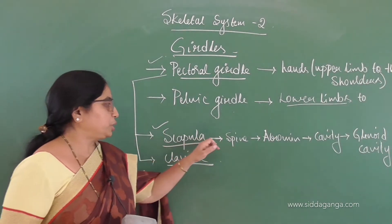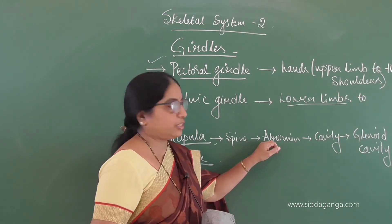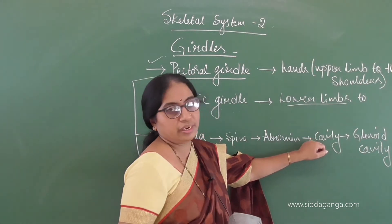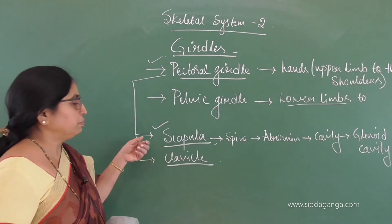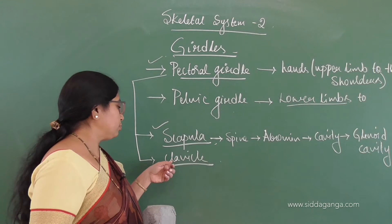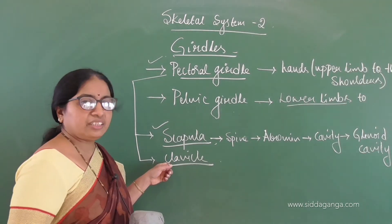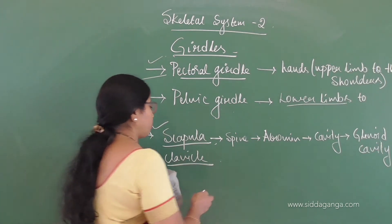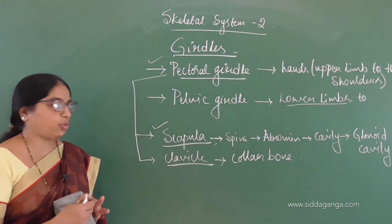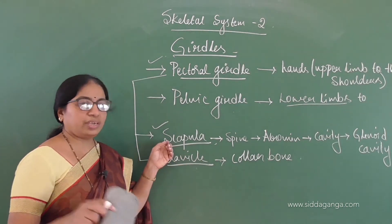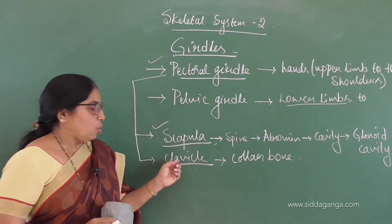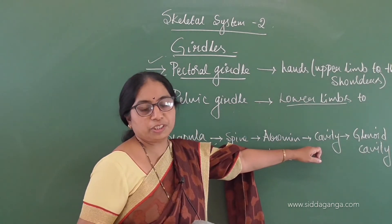The scapula projects into a spine, becomes a flat surface called the acromion, which opens into the glenoid cavity, and to this glenoid cavity the humerus bone of the upper arm is attached. The acromion of the scapula also attaches to the clavicle. The clavicle is another bone also called the collar bone. Together, the scapula and clavicle form the glenoid cavity to which the humerus bone articulates.